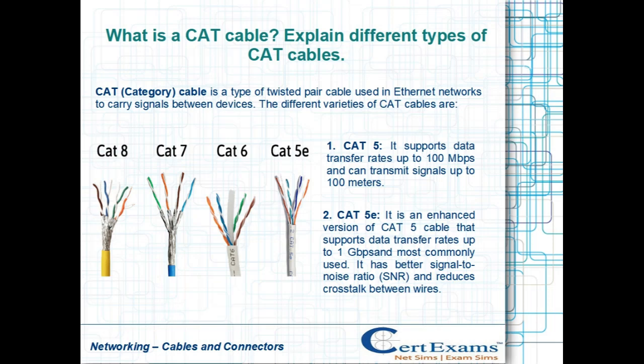CAT 5e is an enhanced version of CAT 5 cable that supports data transfer rates up to 1 gigabit per second and is most commonly used. It has a better signal-to-noise ratio (SNR) and reduces crosstalk between wires.